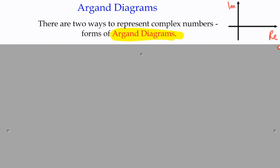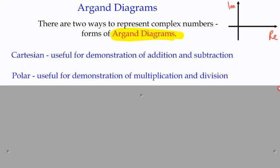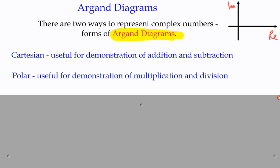What are the two different types and what are they used for? The first, the one we're most familiar with, is the Cartesian plane, where each axis has a scale and we can plot a point based on its vertical and horizontal components. That's really good for demonstrating addition and subtraction. Polar form, or polar coordinates, is particularly good for multiplying and dividing and for showing that in an illustration.